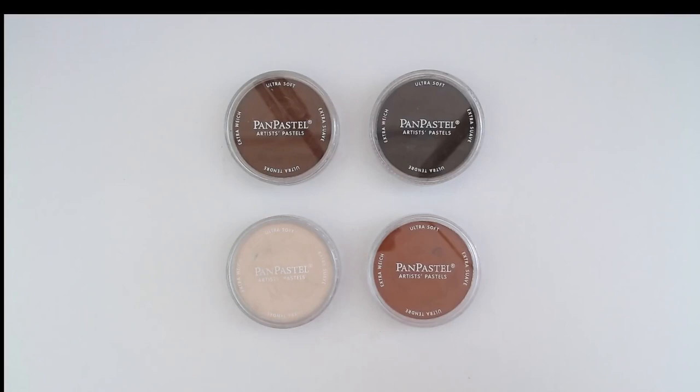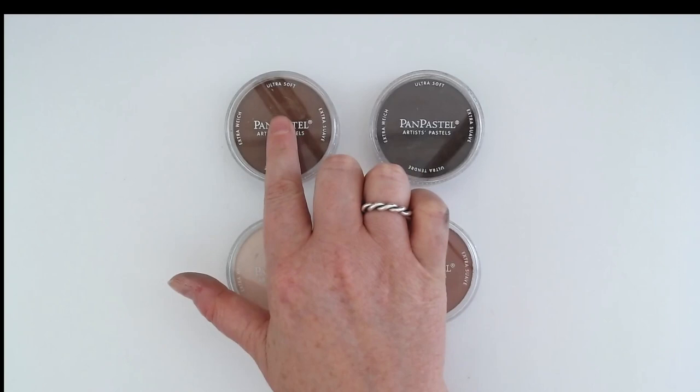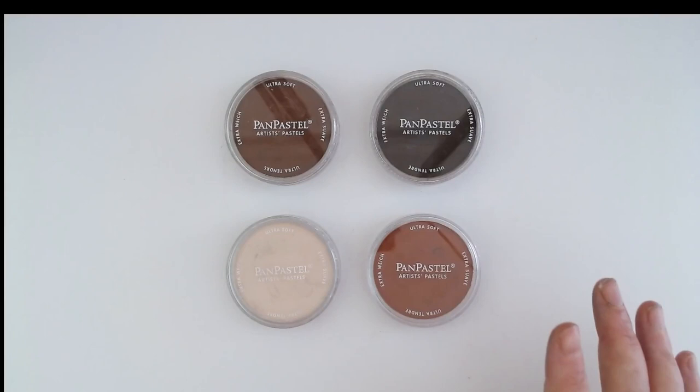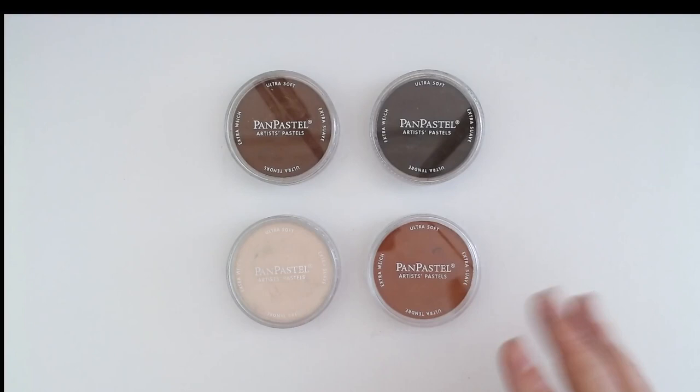PanPastels come as a complete set of 80. Each color comes in a pure form, this is burnt sienna, a tint where they've added white, a shade where they've added a bit of black to the pure color, and an extra dark where they've added even more black to the pure color. It may seem expensive to buy the full set. You can get smaller sets such as a portrait or a landscape set, or you can buy them as open stock. They're around six to seven pounds a pop. You have to shop around and you can get some bargains and cheaper prices. I'll add some links in the description below.